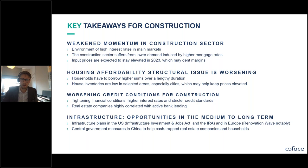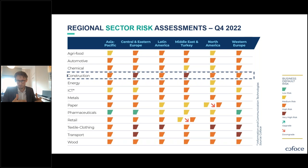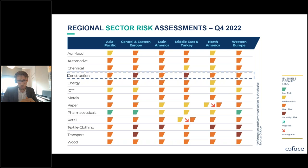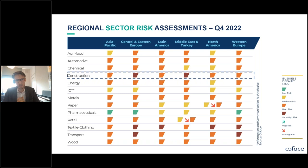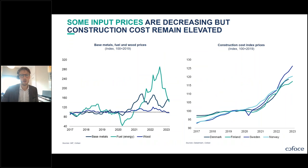On top of assessing 160 countries, Cofas conducts sector risk assessments for nearly 30 countries worldwide. In the construction sector, we generally find a high to very high risk environment. In Europe — both Western and Central Eastern — most countries are rated high risk, with a few, including the United Kingdom and Poland, rated very high risk.